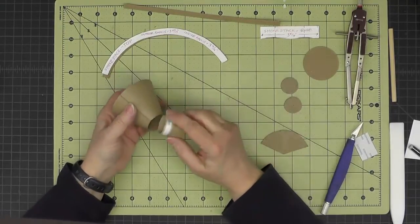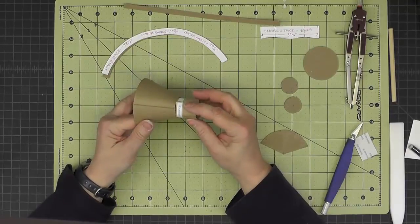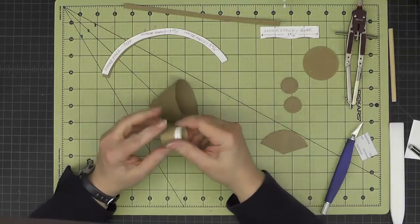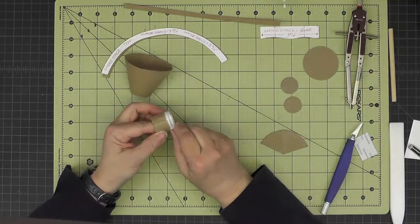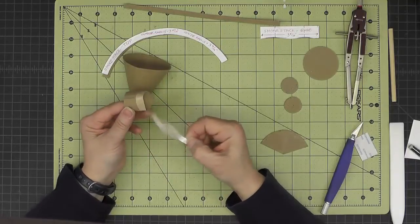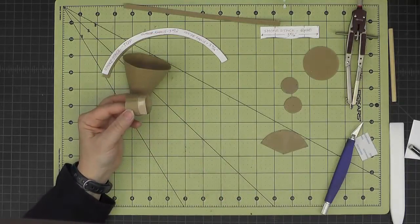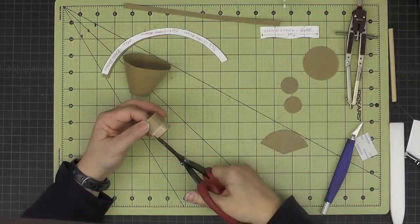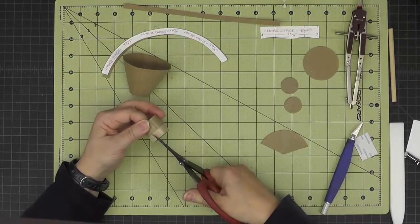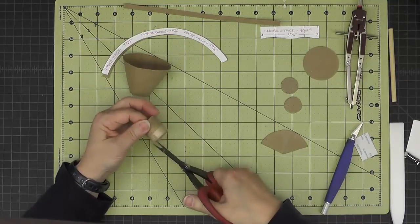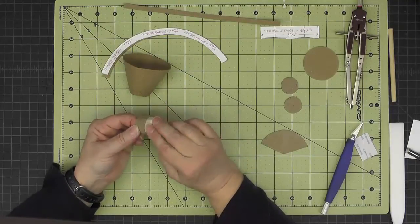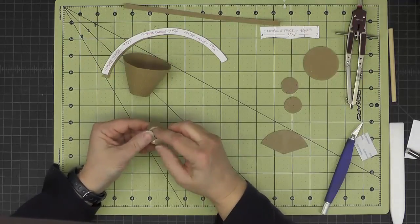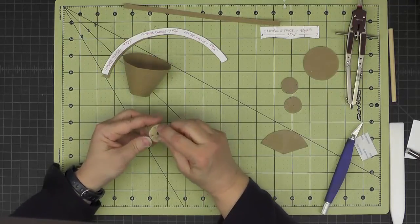So now we're going to join the base to this piece. And I'm going to do that by removing that score tape backing. I'm just making a series of little snips, about every three-sixteenths of an inch or so. And then I'm going to just kind of fold these in a little bit so they won't want to stick prematurely to the cone part.